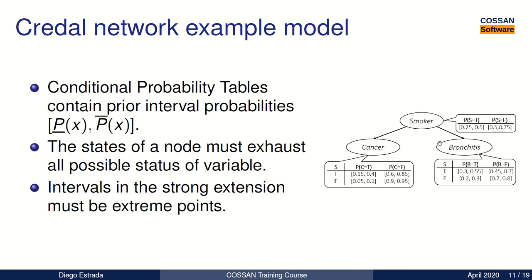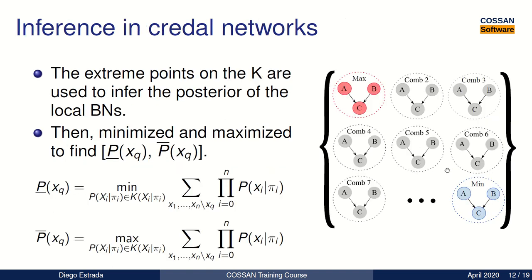We will use this example in our next tutorial, where we will build our Credal Network in OpenCOSAN. Inference in Credal Networks, differently from Bayesian Networks, is performed by computing the posterior probability for each extreme point in the network.